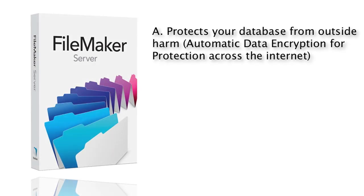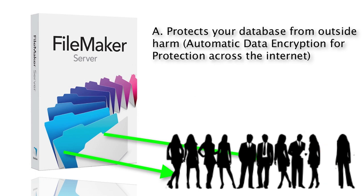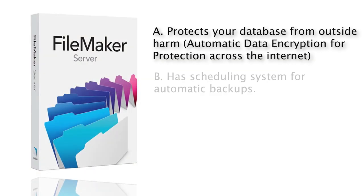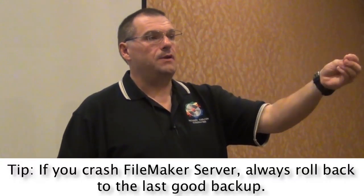FileMaker Server works hard to protect your database from outside influences that would cause it to crash. If a client has a problem, it can disconnect the client and keep the server running without issue. FileMaker Server also provides a complete scheduling system to set up automatic backups. We set ours to backup every 15 minutes, but some customers may only backup once an hour or even once a day. The critical thing to remember is that if you crash a FileMaker Server, you always roll back to the last good backed-up copy. If you only backup once a day, you may have to restore to a copy that's a day old, so you'd prefer to have a fresh backup.